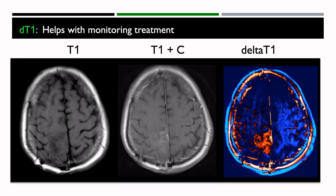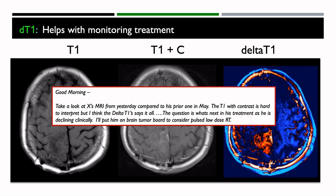We find delta T1 is very helpful on a daily basis with monitoring treatments. Here's an example of a pre- and post-contrast T1 where it's hard to see the enhancement, but delta T1 makes it clear. That was the response of the neuro-oncologist who said: 'Take a look at this person's MRI from yesterday compared to his prior one in May. The T1 with contrast is hard to interpret, but I think the delta T1 says it all.'